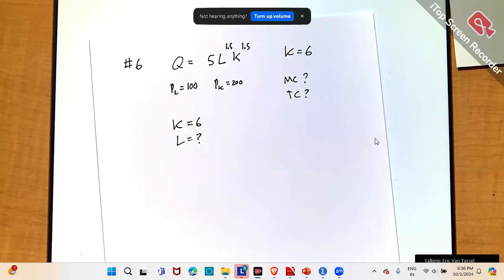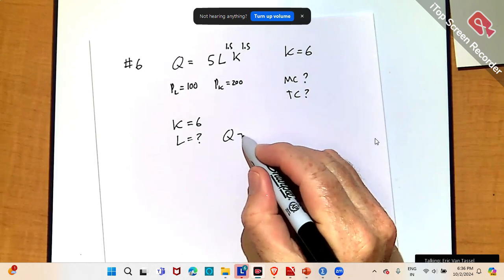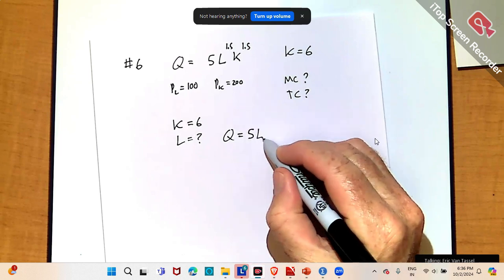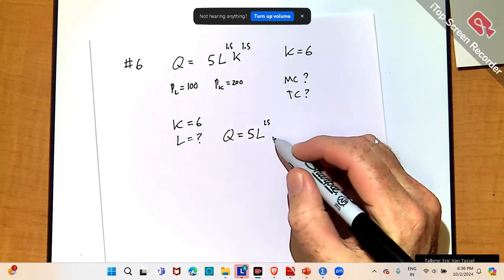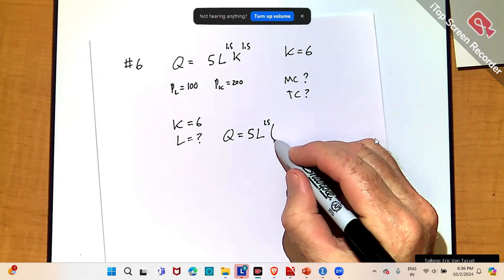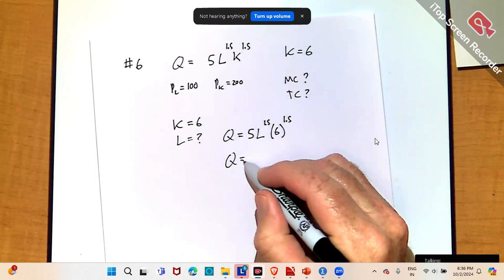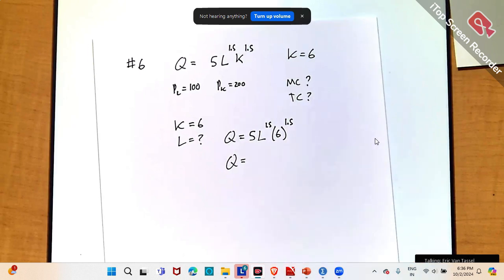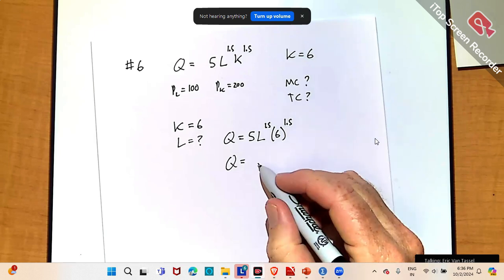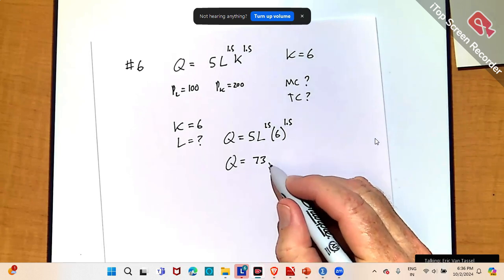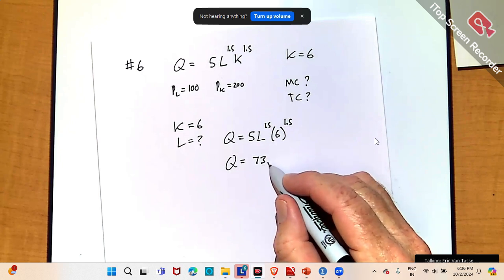So for my labor, I can go to the production function, which is Q equals 5 times L to the power 1.5, and then K is 6 to the power 1.5. I'm going to do some ugly calculator work. I think 6 to the power 1.5 is, times 5, so you get like 73.48.